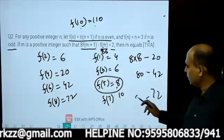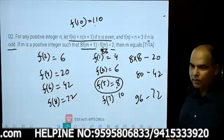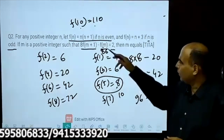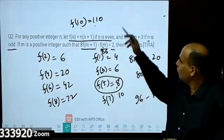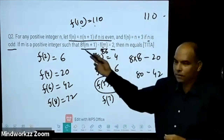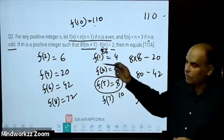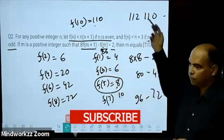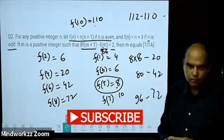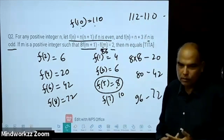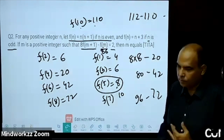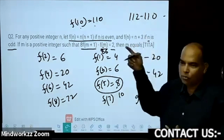Continuing: 8×12 = 96, minus 24. Next, at n=10: f(10) = 110, and 8 times f(11) = 8×112... giving the difference of 2. So the answer is m = 10.